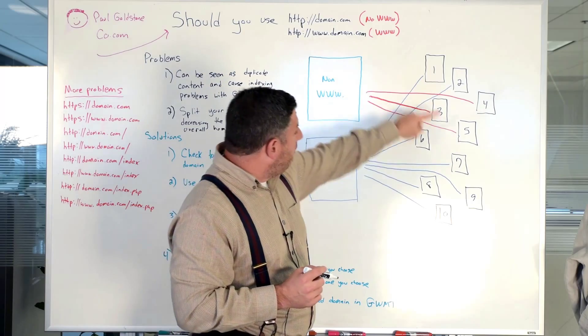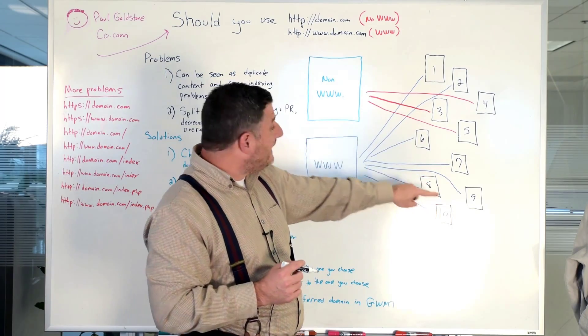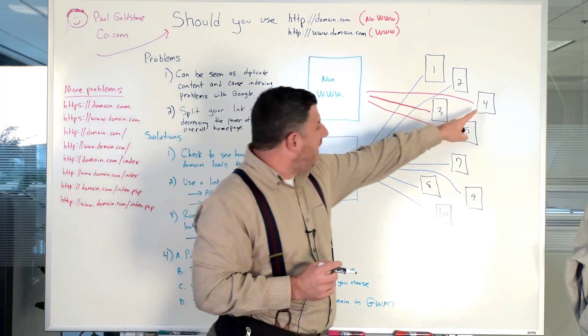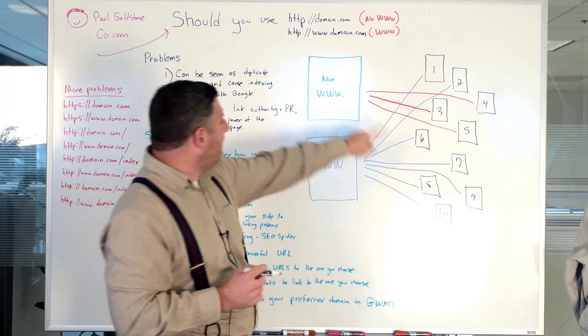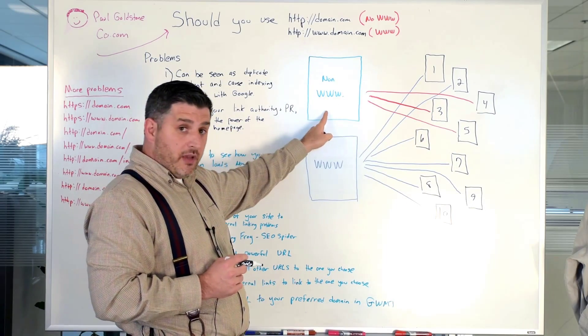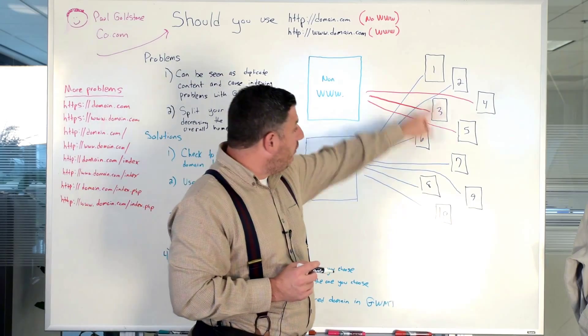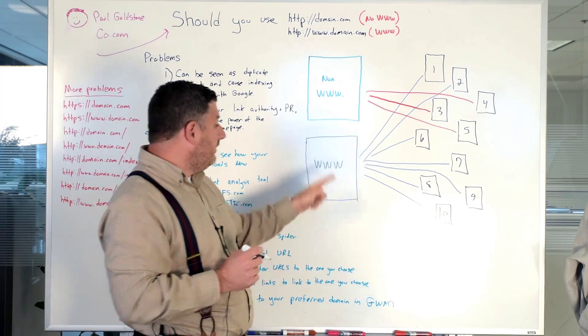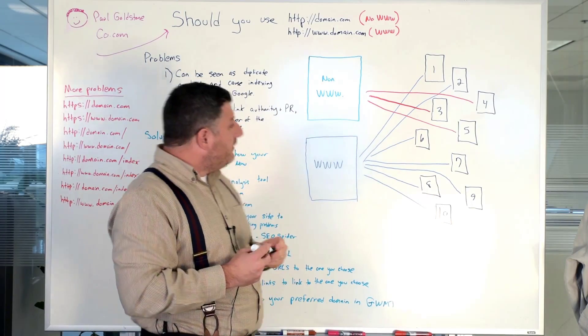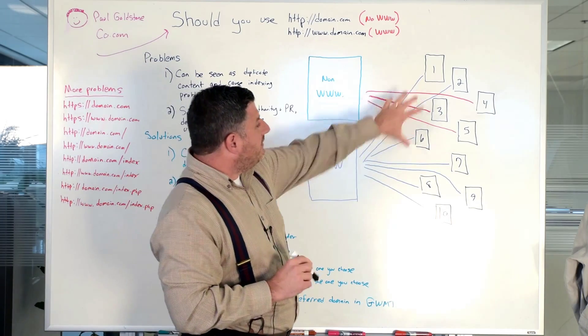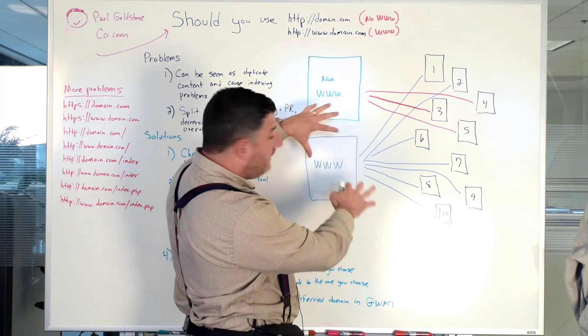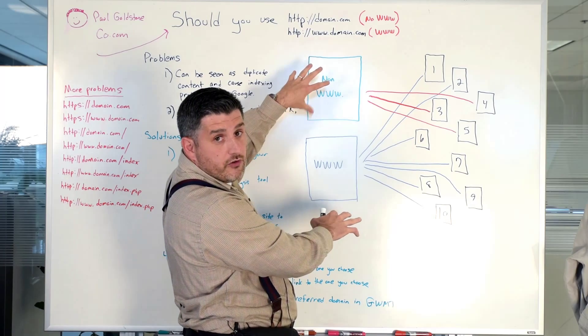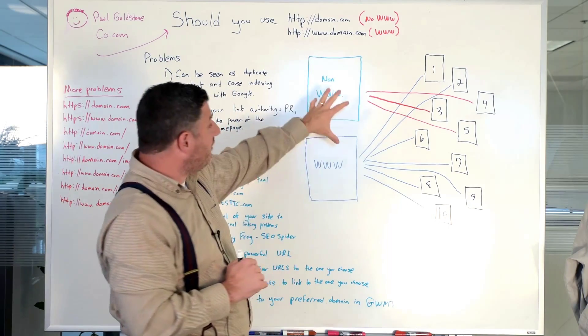But if there's 10 websites out there that are linking back to you, and let's just say site four, three, and five are linking to the non-www page and the rest of them are linking to the www page, well what's happening is you're actually splitting the page rank in between two different versions of your homepage. And it doesn't just stop there.